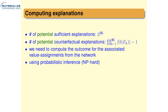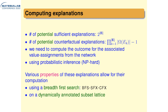Computing this is quite complex — there's already an exponential number of potential sufficient explanations, exponential in the number of observed variables. For counterfactual explanations, the number of values of observed variables also plays a role. For Bayesian networks, every time we check whether something is a sufficient or counterfactual explanation, we need to do inference in the network, which is NP-hard. So we use a breadth-first search on a subset lattice that we dynamically annotate, hopefully without exhaustively searching everything.